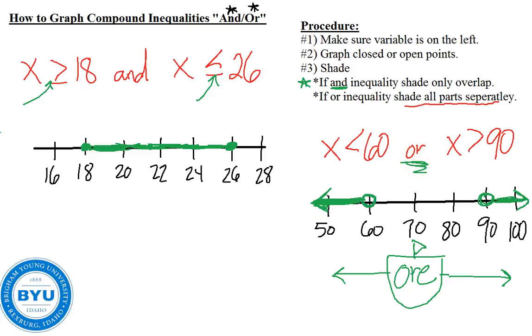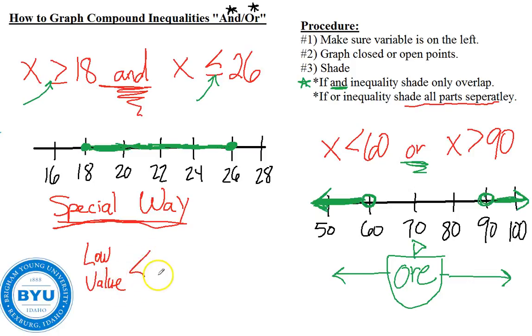Now the last thing you're going to need to remember is that when dealing with an and inequality, and inequalities can be written a special way. There's a special way to write them. There is no special way to do an or inequality, but with and inequalities, you can put the low value to the left and use a less than or equal to sign, put the variable in the middle, and then a less than or equal to sign and have your high value.